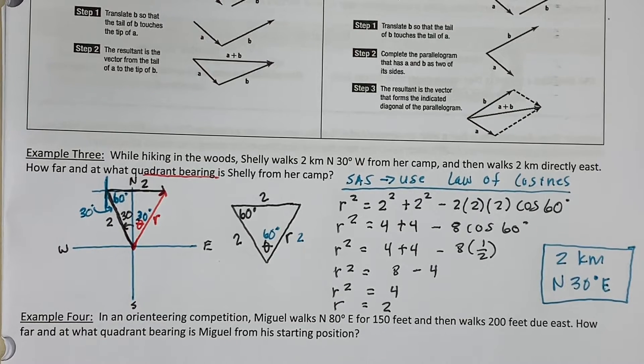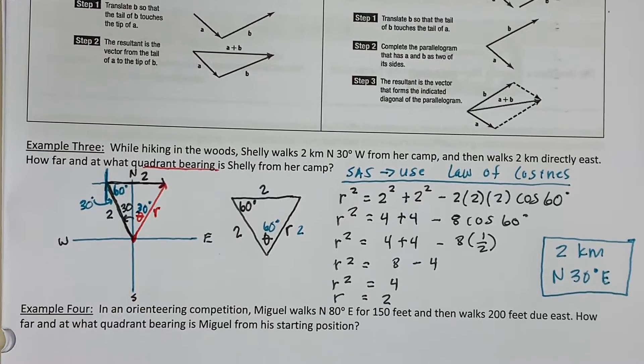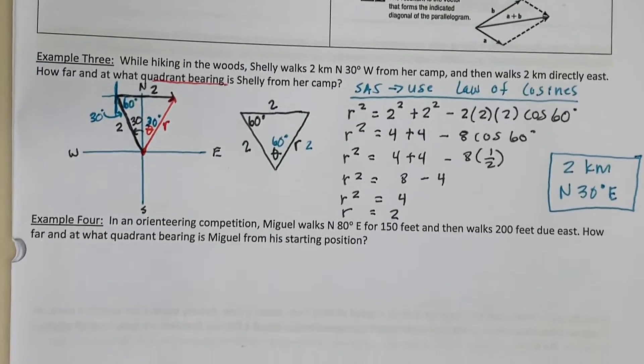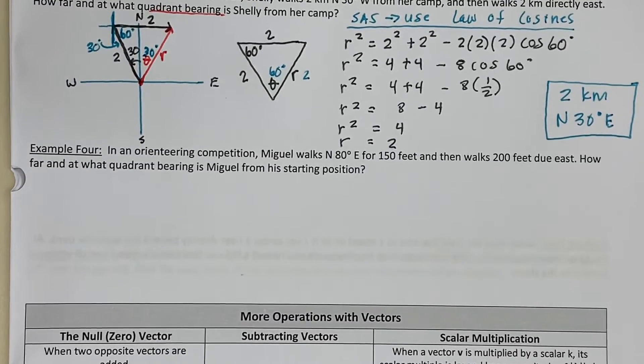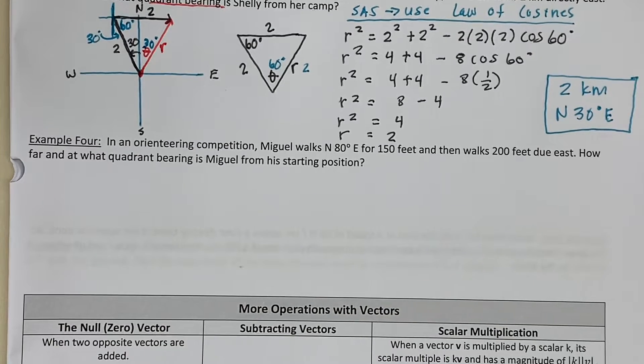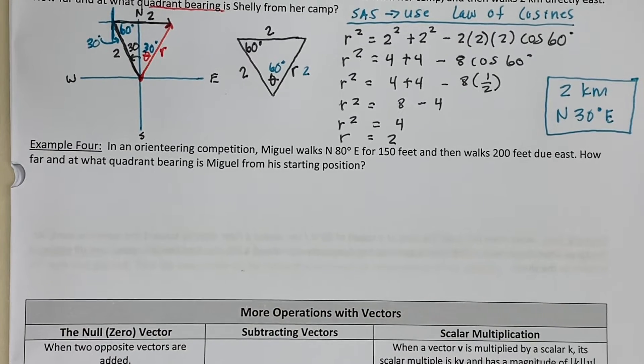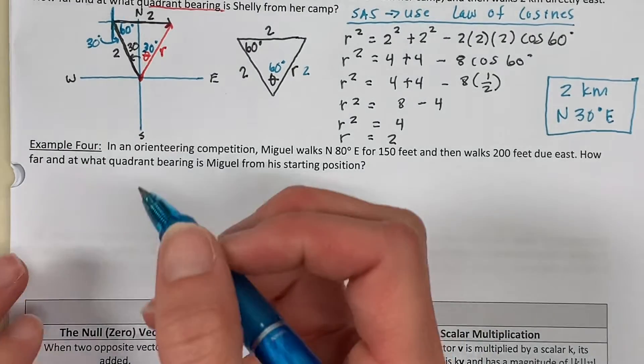I'm going to have you pause the video and attempt example 4. And when you're ready to see it worked out, hit play. Example 4. In an orienteering competition, McGill walks north 80 degrees east for 150 feet, then walks 200 feet due east. How far and at what quadrant bearing is McGill from his starting position?